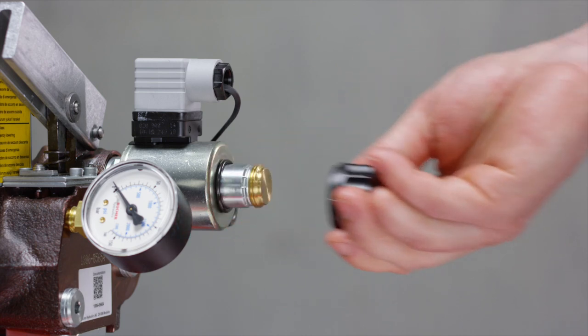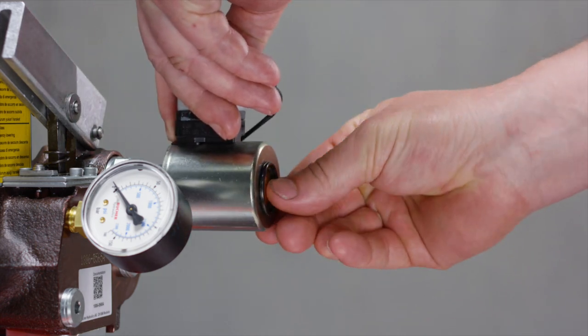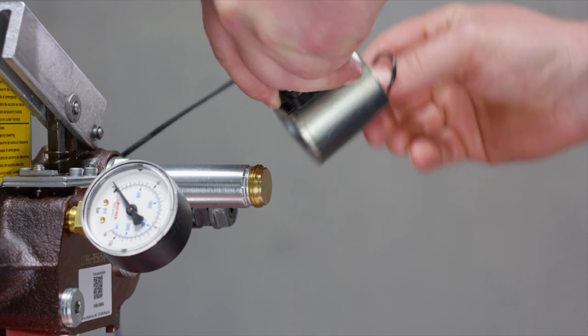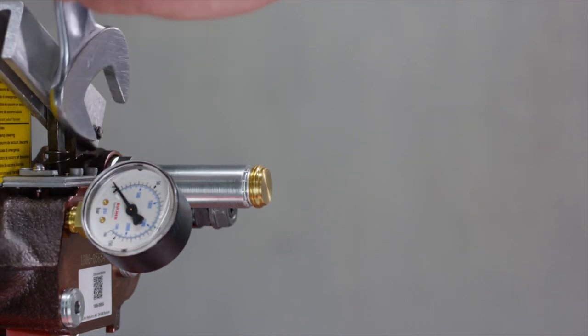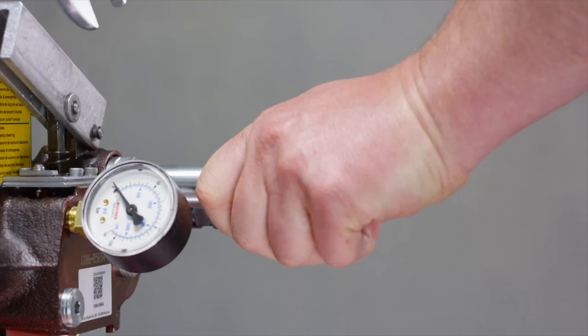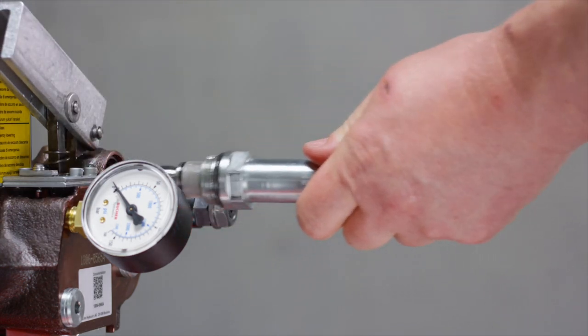Remove the knurled nut from the up-down solenoid. Remove the solenoid coil together with the O-ring of the solenoid core tube. Loosen and unscrew the pilot valve with a wrench size 27.